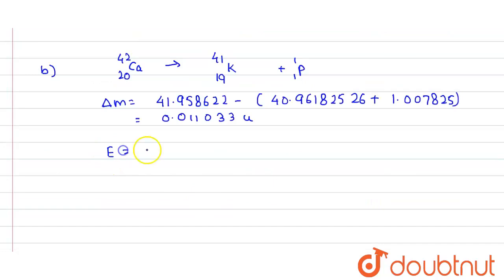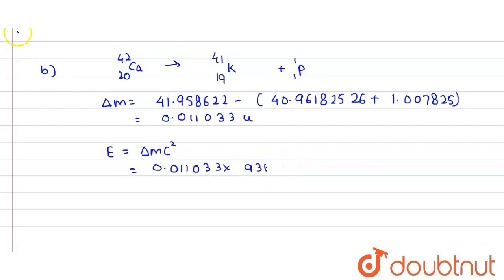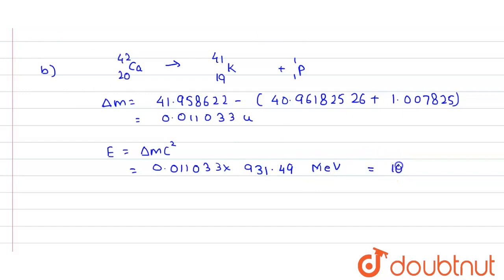Using E = Δmc², we put in the value 0.011033 and multiply by 931.49. Our final answer for part B turns out to be 10.27 MeV. So we have calculated the energy for both the proton case and the neutron case.